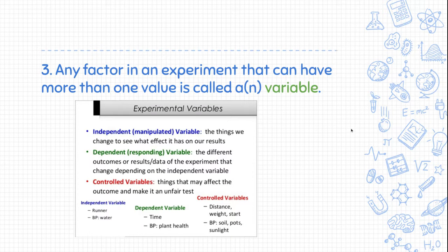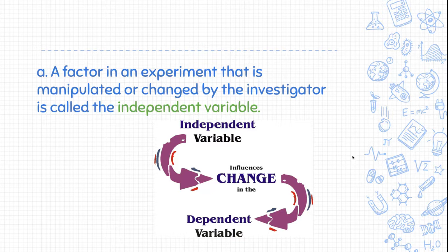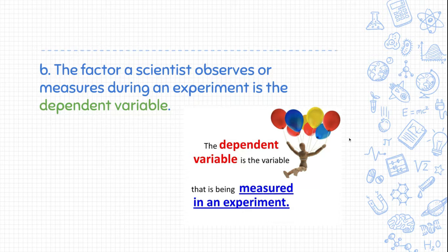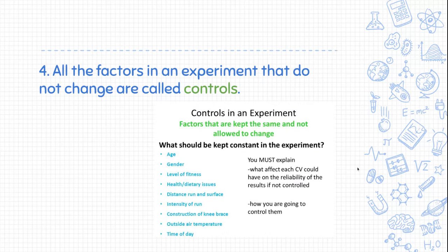Anything in an experiment that can have more than one value — whether in math or science — is called a variable, because it can vary. The factor in the experiment that is changed or manipulated by the scientist is the independent variable, also known as the manipulated variable. The factor that we measure based on the independent variable is the dependent variable, because it depends on the independent variable. If this sounds familiar, it's because we just studied this a couple of weeks ago.